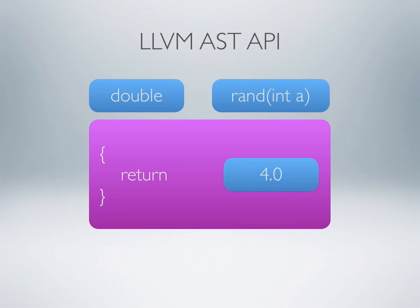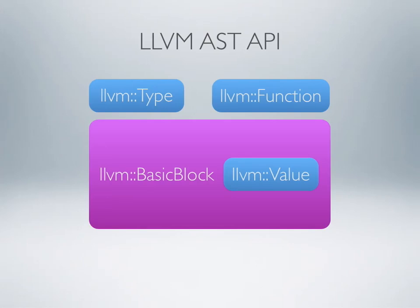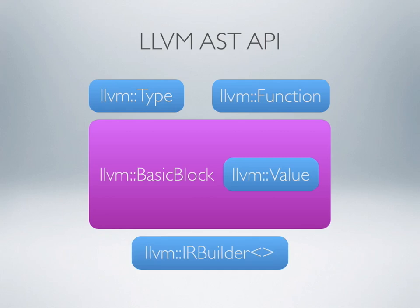In general terms, you want to convert your source code into some sort of abstract syntax tree. For example, we have a function that returns a double, it's called 'rand', it takes an integer 'a' as a seed, and it returns four. Internally we want to convert this into LLVM structures: the return type is an LLVM type, the function itself is an LLVM function, internally we have a basic block — the thing between the curly braces — and then we have our return value. There's also an IR builder, the intermediate representation builder, which is a convenience tool to create instructions and put all this stuff together.